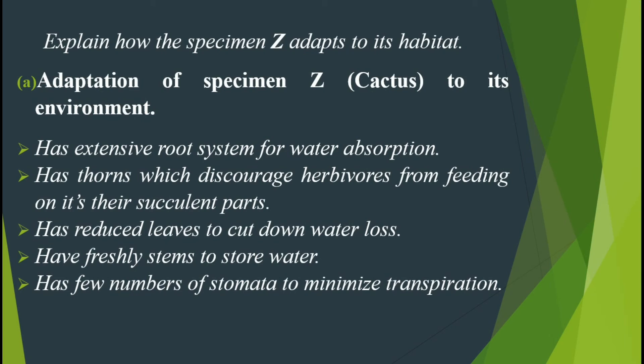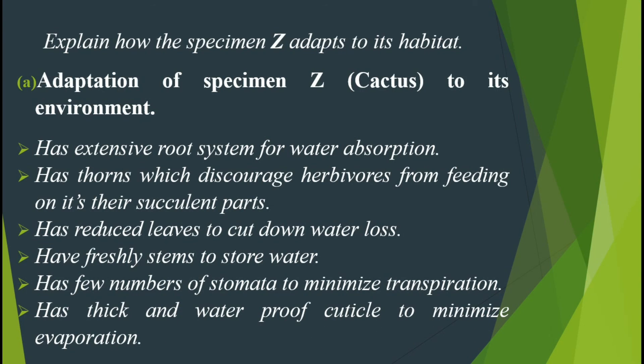As you know, plants lose water through stomata, and that process is called transpiration. So this plant minimizes transpiration by having very few stomata. The last point is that it has a thick and waterproof cuticle to minimize evaporation. The leaves are also a site for evaporation of water in plants, but this plant has a thick and waterproof cuticle which minimizes evaporation.